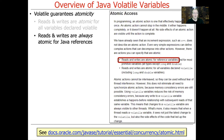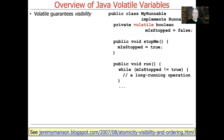Reads and writes are always atomic for Java references. So if you have a Java reference like Stack s = new Stack(), s is a reference, and those are also always atomic — you don't have to define those as volatile. The reference values are always atomic.